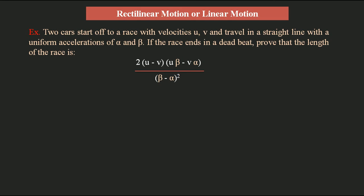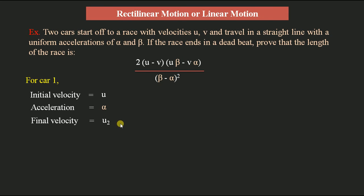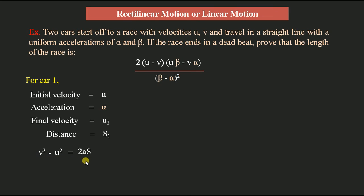For car 1, the initial velocity is u, acceleration is α, final velocity is assumed u2, and distance traveled is s1. Using the standard equation v² − u² = 2as, we write: u2² − u² = 2α·s1.